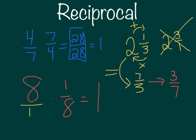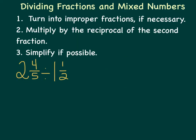Reciprocals will be really important as we move into dividing fractions and mixed numbers. Here are your formal steps. Step one: turn them into improper fractions if necessary — if they're mixed numbers or whole numbers, make sure you turn them into fractions first. In this example we need to do that. Five times two is ten, plus four is fourteen-fifths, divided by two times one is two, plus one is three-halves. So we turn them into improper fractions.